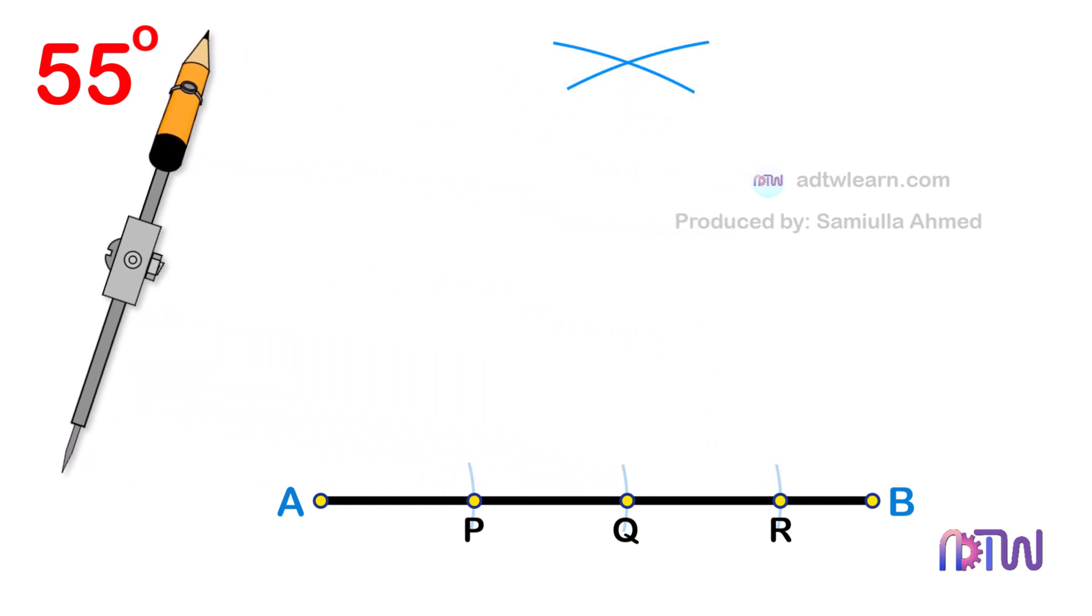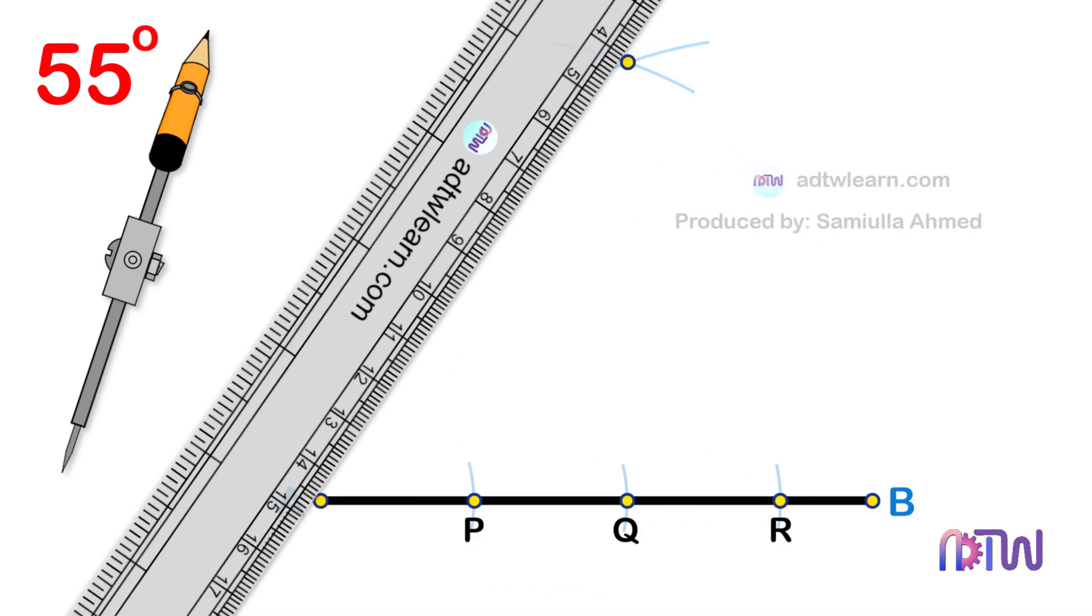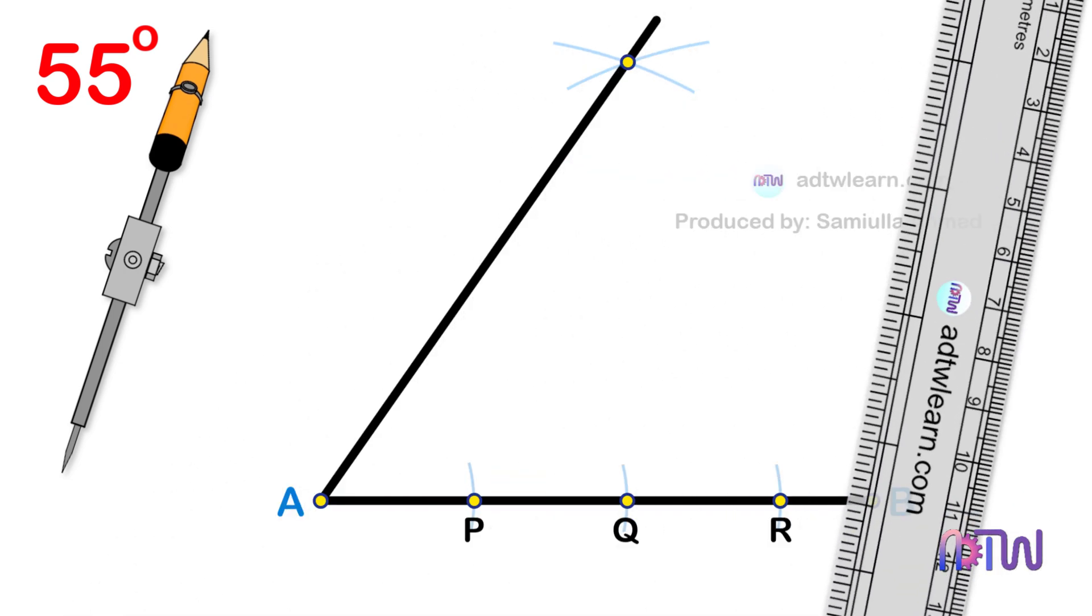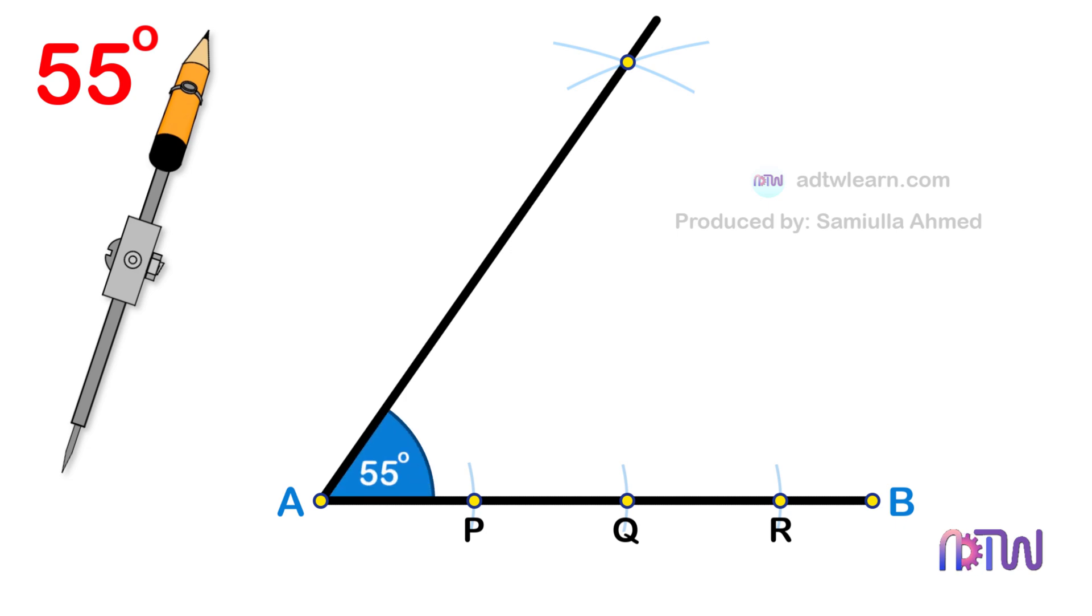In the end, draw a line passing through this point from endpoint A of the line segment. This line will be inclined at the required 55 degree angle.